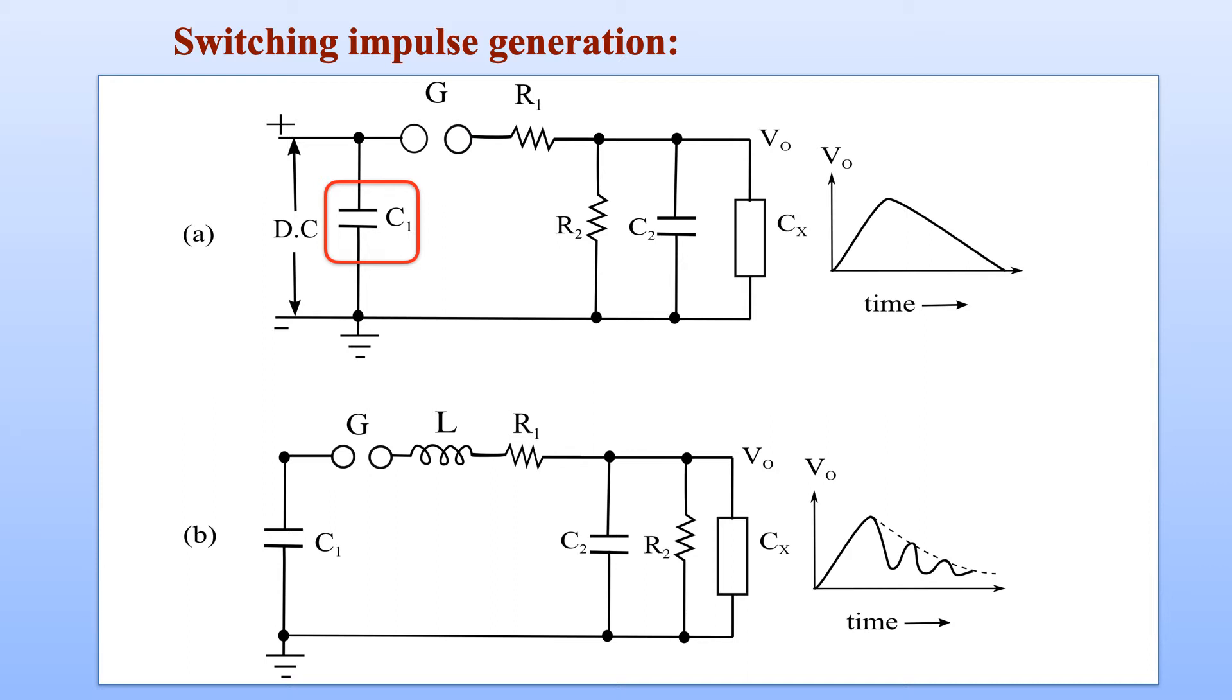Let us now check the switching impulse generation circuit. This is a basic switching impulse generation circuit derived from a lightning impulse generator. The principle of operation can be understood with two configurations: one without a series inductor and other with a series inductor. The above circuit shows an input capacitor or generator capacitor C1 which will be charged from a DC source or high voltage DC rectifier.